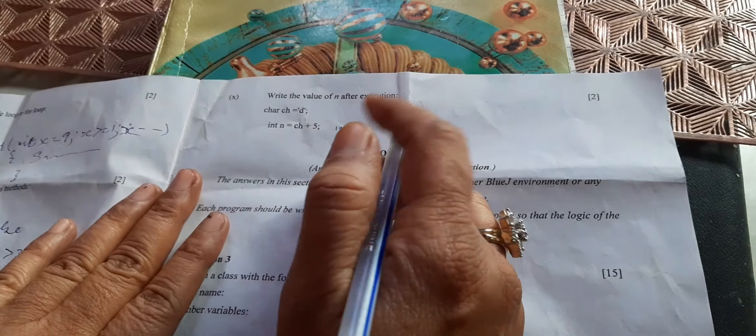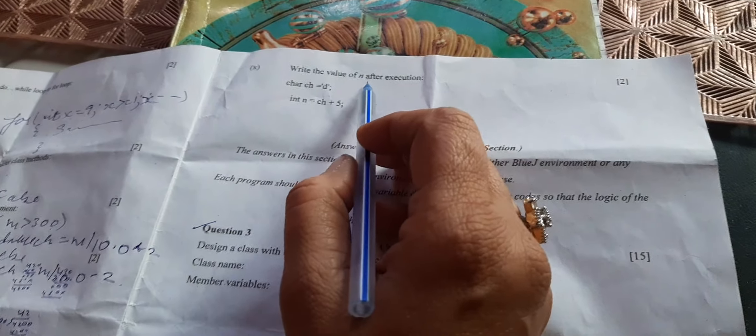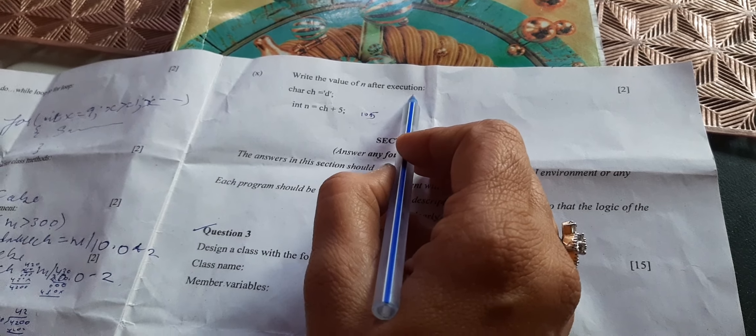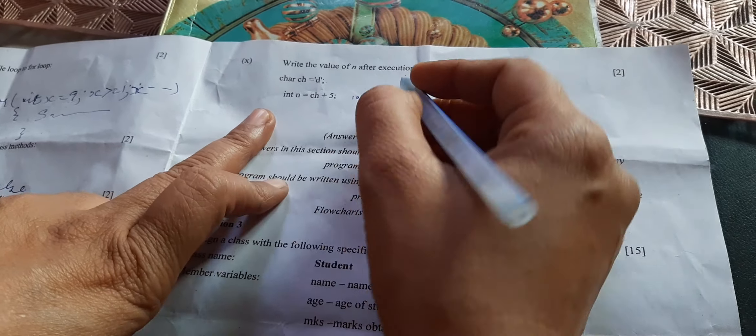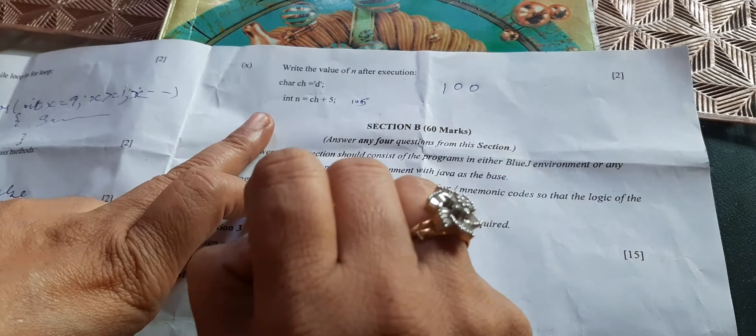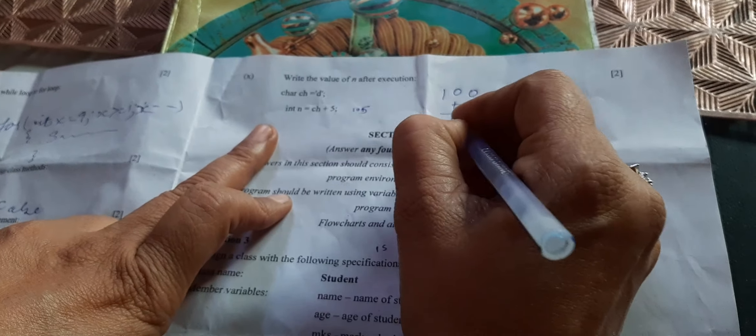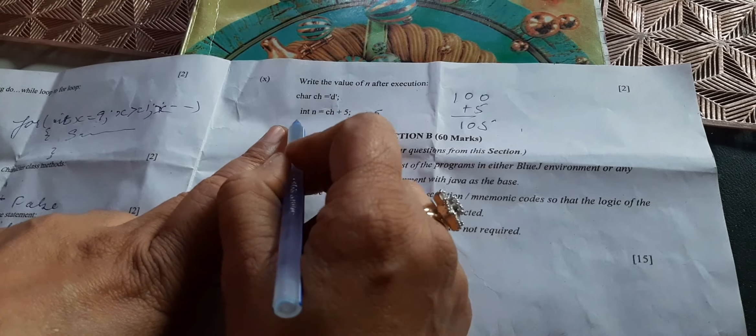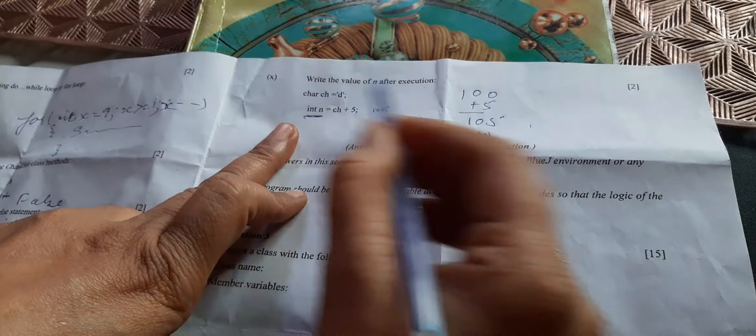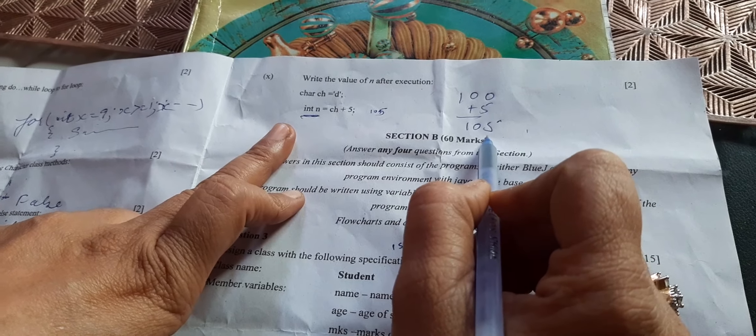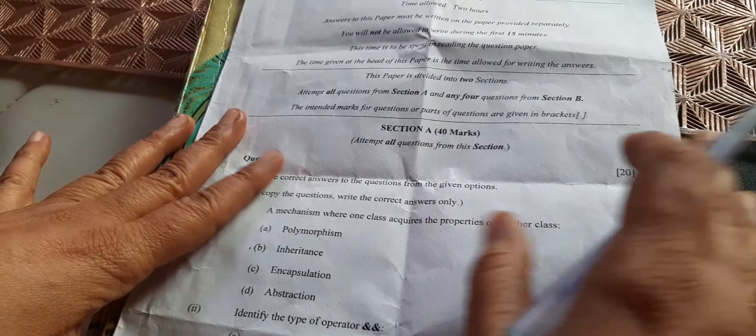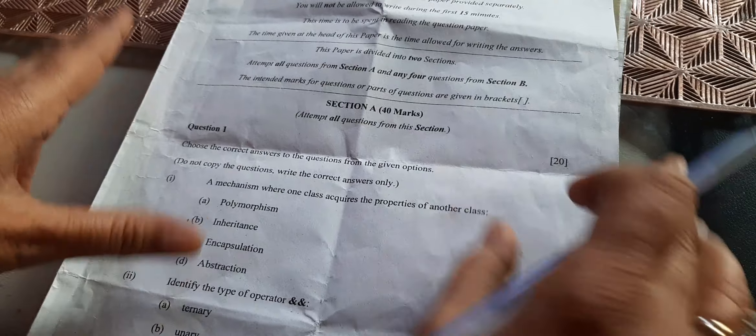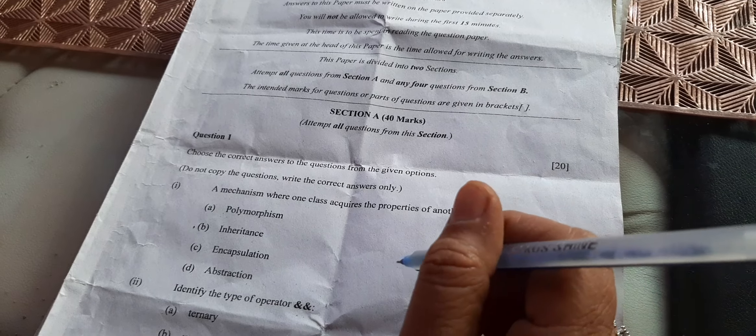Write the value of n after execution. d value is capital A. Small d value, ASCII value is 100. In 100 if you do plus 5, it will become 105 because we are assigning to integer, so its value will be 105. I hope your paper was good. Section A I have solved. You can calculate how much marks you will score out of 40.